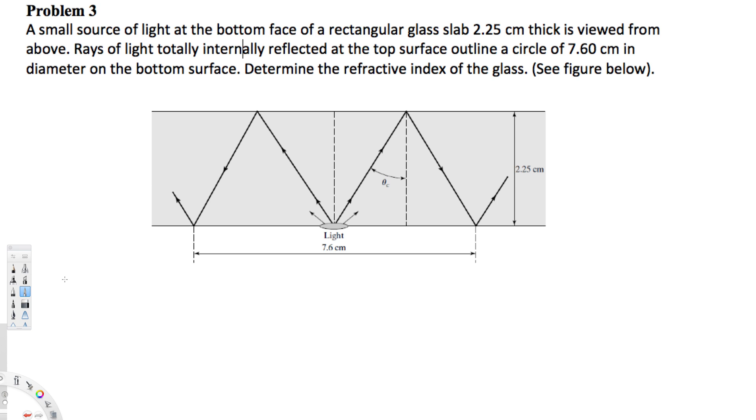What's going on guys, let's try this problem right here. This question is asking: a small source of light at the bottom face of a rectangular glass slab 2.25 centimeters thick is viewed from above. Rays of light totally internally reflected at the top surface outline a circle of 7.6 centimeters in diameter on the bottom surface. Determine the refractive index of the glass.